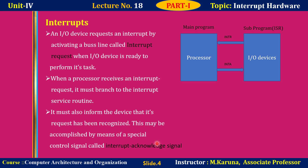Interrupts are usually generated by hardware devices external to the CPU. Here, the processor and I/O devices are shown. The processor is busy with the execution of the main program. Whenever I/O devices are ready to perform their task — we can take either keyboard or display device — when those devices are ready, they send the request to the processor. In this case, I/O devices send the interrupt request to the processor by activating a bus line called Interrupt Request, when the I/O device is ready to perform its task.